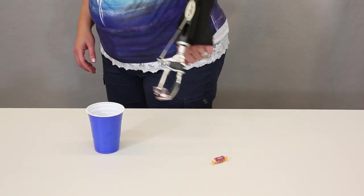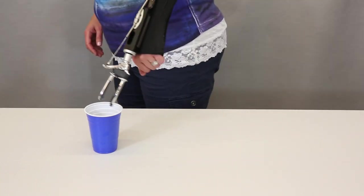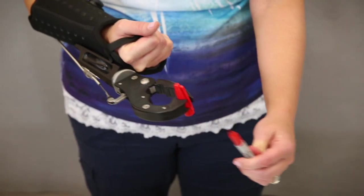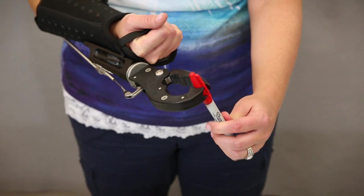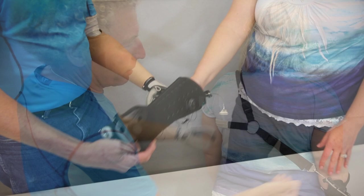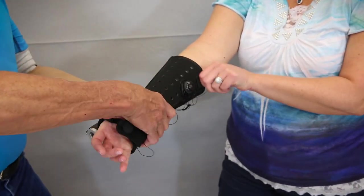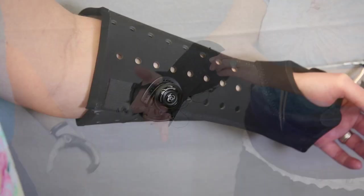Additionally, it includes a Hosmer 5XA Voluntary Opening Split Hook and a TRS Voluntary Closing Grip 3 Prehensor. We also supply it with a fully adjustable Northwestern Figure 9 Harness and Cable System. The TRS Simulator will immediately fit a wide variety of arm sizes because of its flexible material and BOA closure system.